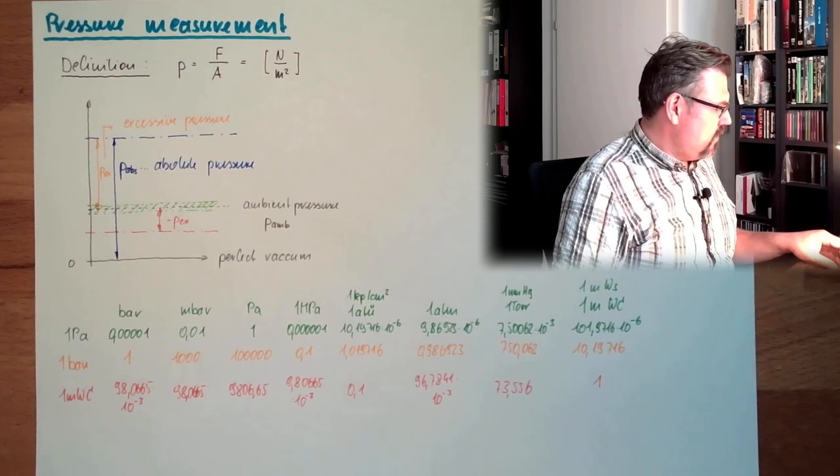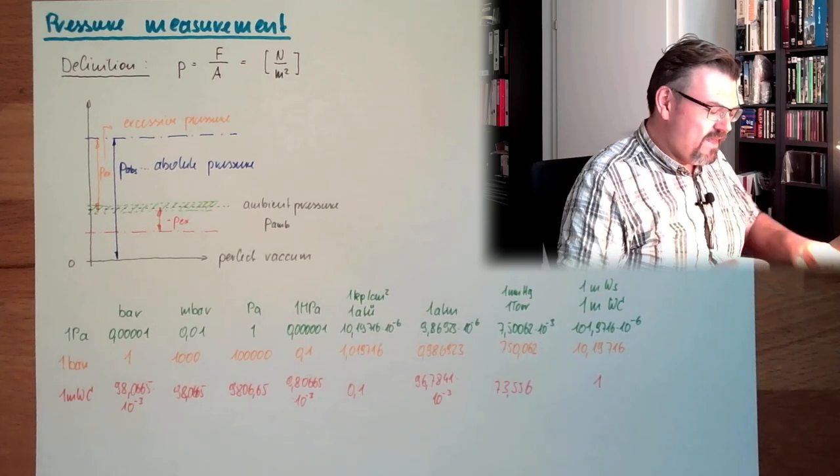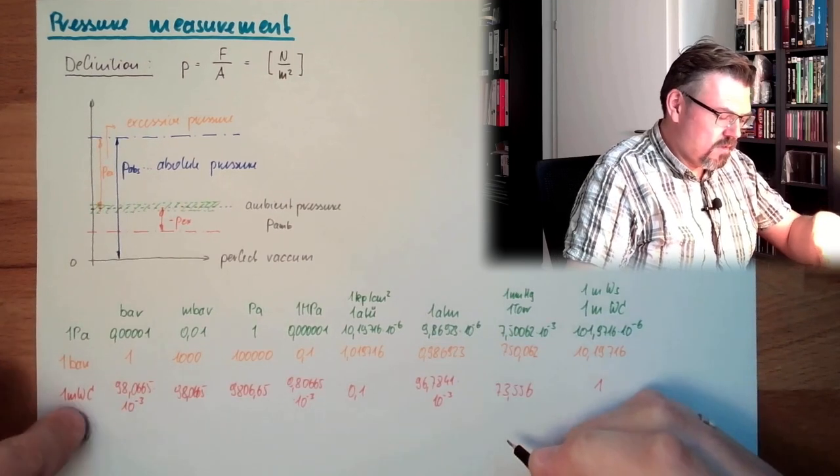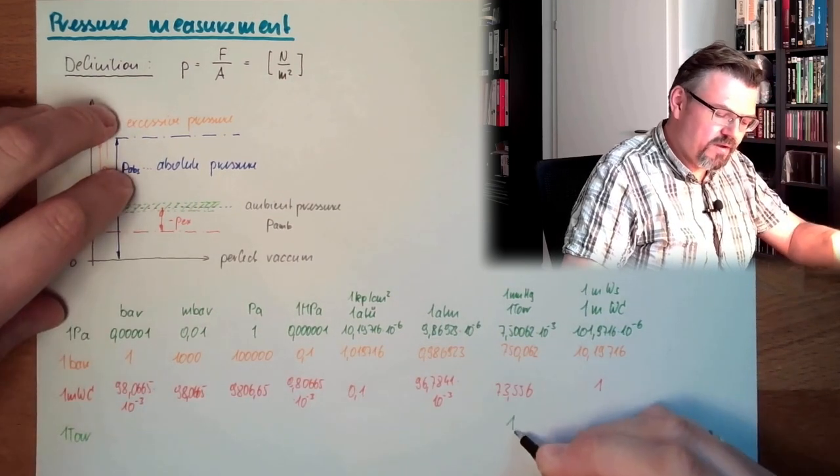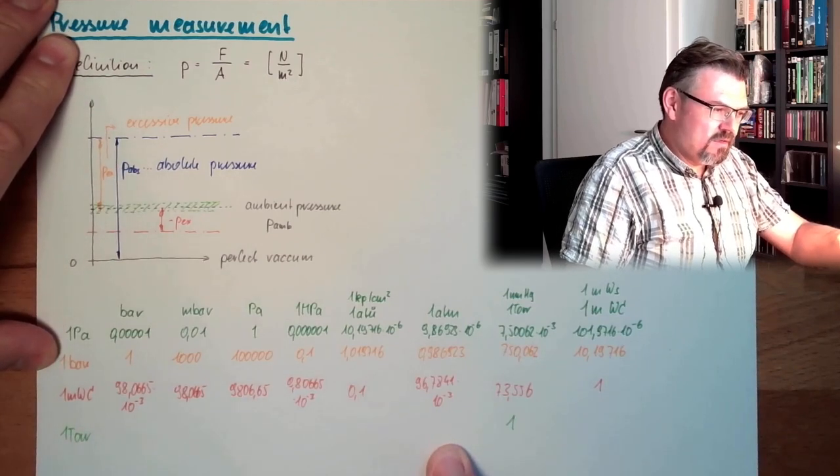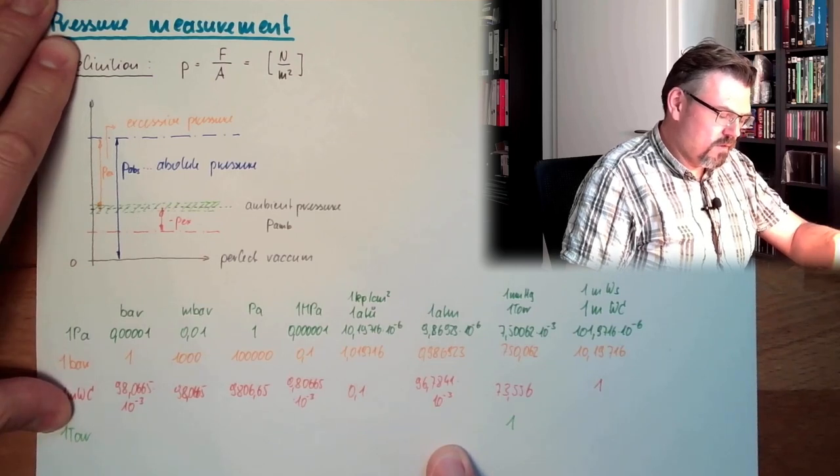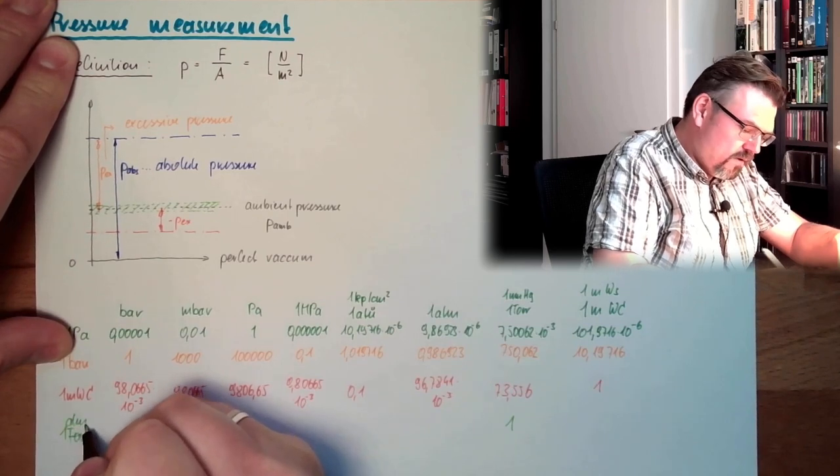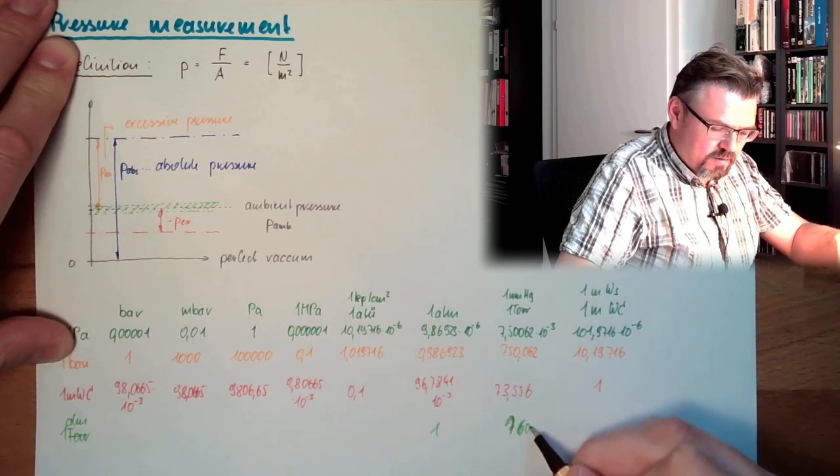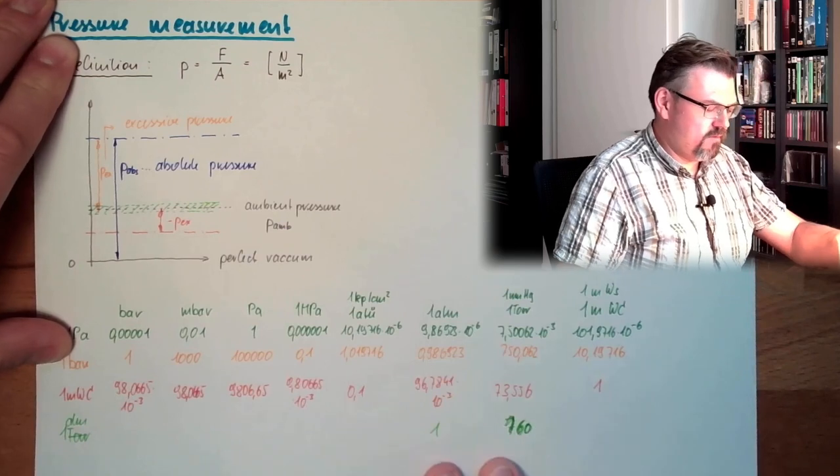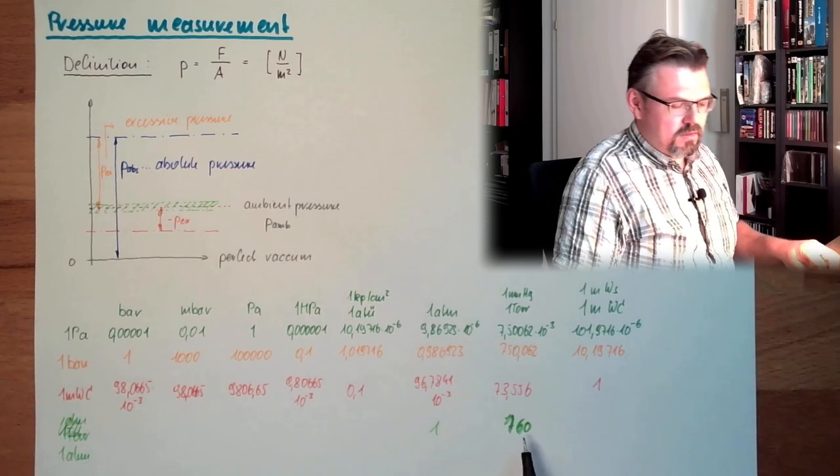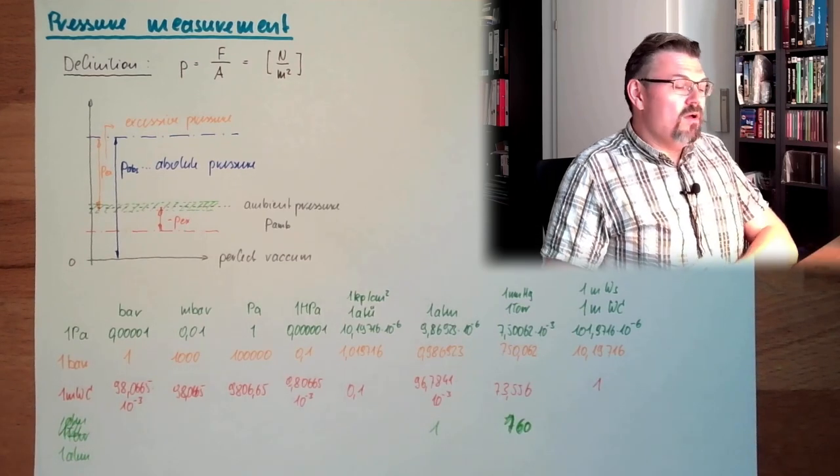And one thing which is also because of the history from Evangelista Torricelli, we have here 1 atmosphere, and this is 760 millimeters of mercury. That's 1 atmosphere. This is what Evangelista Torricelli found out.